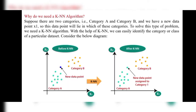Why do we need a KNN algorithm? Suppose there are two categories, Category A and Category B, and we have a new data point X1. This data point needs to be placed in one of these categories. Whether X1 belongs to Category A or Category B is decided by the KNN algorithm.